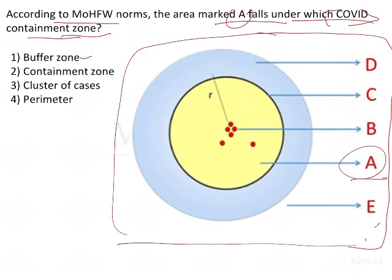Coming to the options: buffer zone, containment zone, cluster of cases, and perimeter. If you look at the red colored dots, those are the cases — a cluster of cases. So B is the cluster of cases.